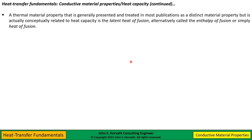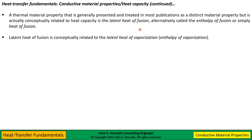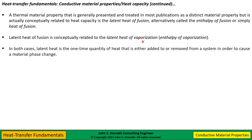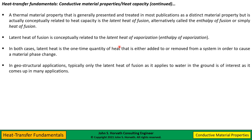There's a thermal material property that in most books is presented as a distinct material property, but it is really conceptually a part of heat capacity. This is the parameter of latent heat of fusion. Sometimes you'll hear it called enthalpy of fusion or simply heat of fusion. Latent heat of fusion is conceptually related to the latent heat of vaporization. In both cases, latent heat is the one-time quantity of heat — either BTUs or joules — that is either added or removed from a system in order to cause a material phase change. I like to think of latent heat as basically being a slug of heat capacity related to a phase change. In geostructural applications, the phase change tends to be between liquid water and ice.